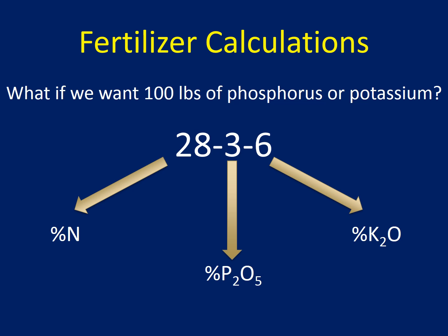We have to go through an extra calculation step to find how much phosphorus is actually in the product. To do that, we identify the amount of phosphorus in P2O5, which is 44% — and that's always going to be 44%, so it's a factor you can use for any phosphorus calculation. For potassium, there's 83% potassium in K2O. We'll be using these factors on the next few slides.